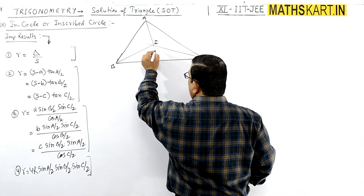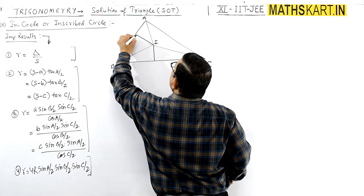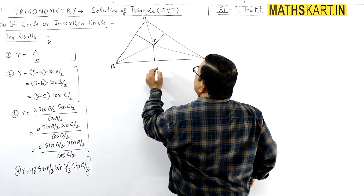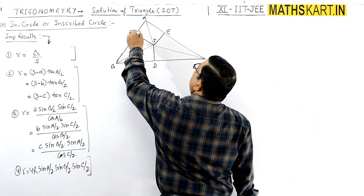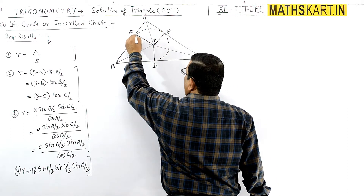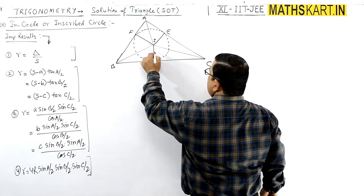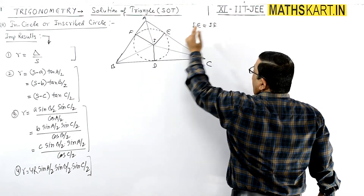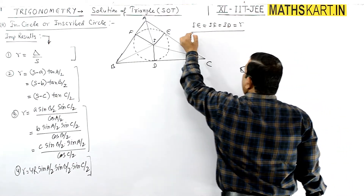From the incenter I, perpendiculars are dropped to each side. There is one perpendicular, a second perpendicular, and a third perpendicular. These are the feet D, E, F. Since the angle bisectors are drawn, the distances IE, IF, and ID are all equal to the inradius small r.